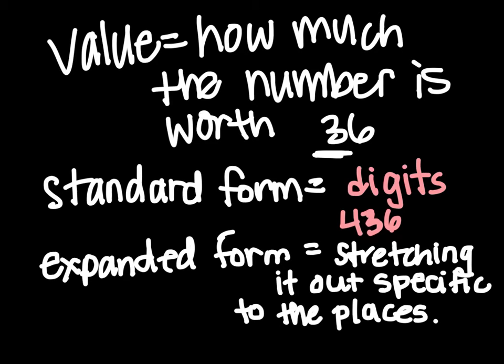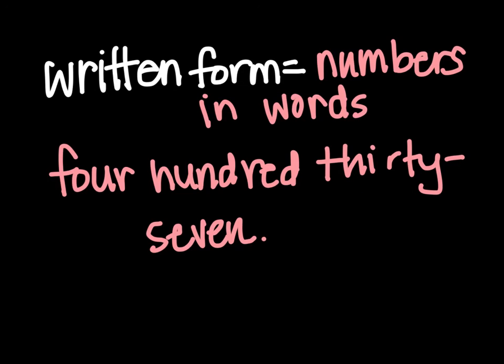The last form that we're going to talk about is written form. And written form is where basically you write the numbers in words. So as you can see, 437 is written out in words, four hundred thirty-seven. Today we're going to focus most of our time on the standard and expanded form.